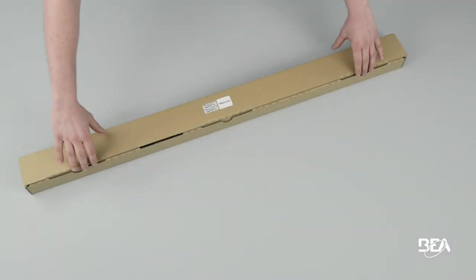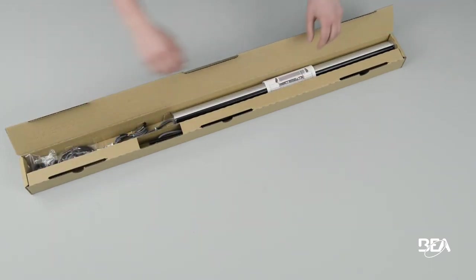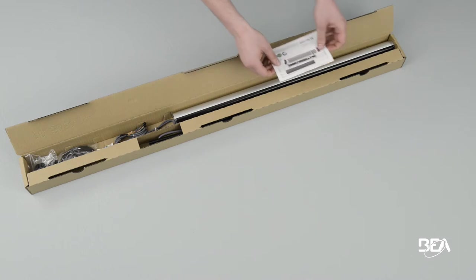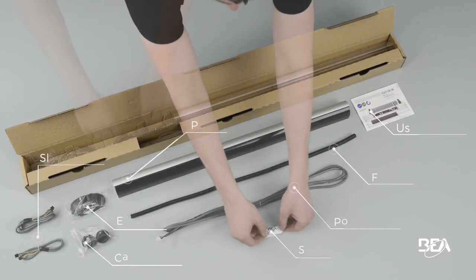The ForSafe SW is a safety sensor using active infrared technology designed for swing doors. You can find all the elements needed for the installation of the ForSafe in the box.